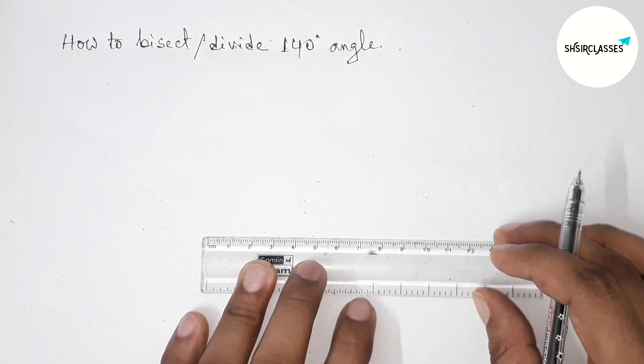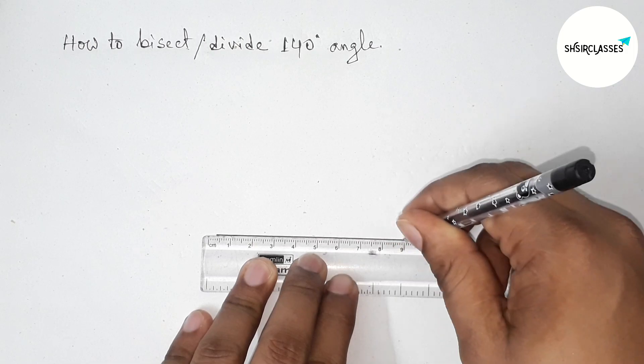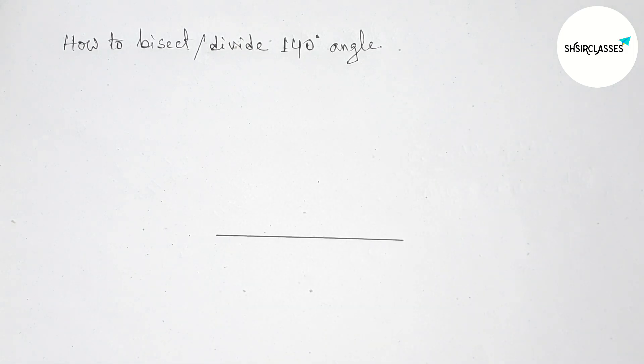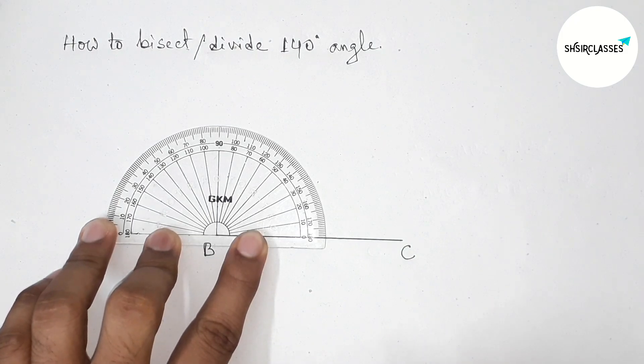First of all, let us draw here a line segment of any length by this way and taking here point B and here C. Next drawing the angle on the point B, so putting the protractor on the point B.